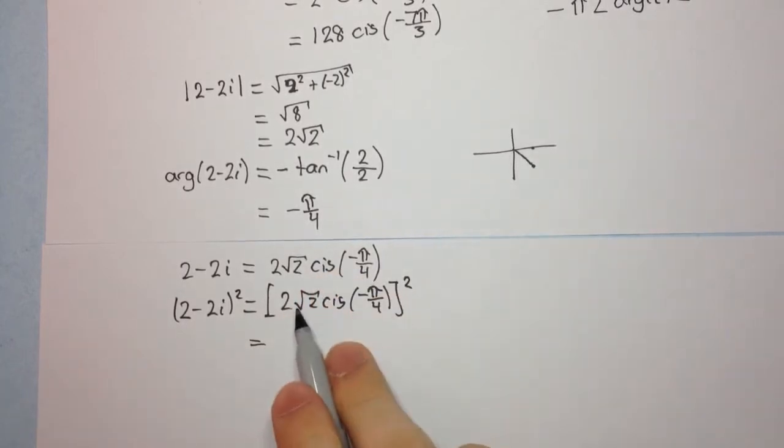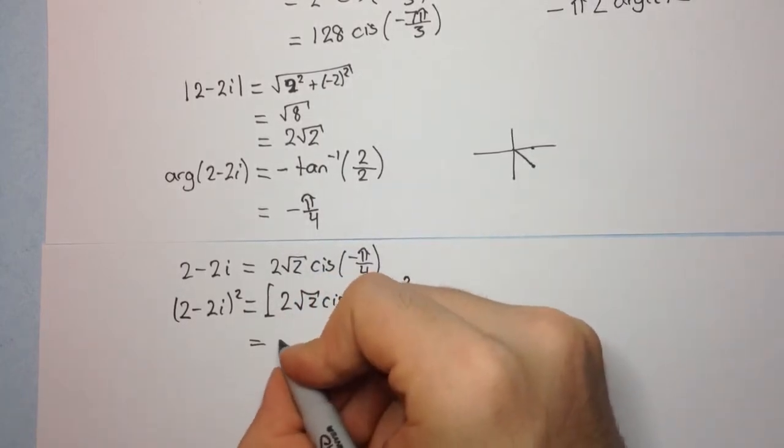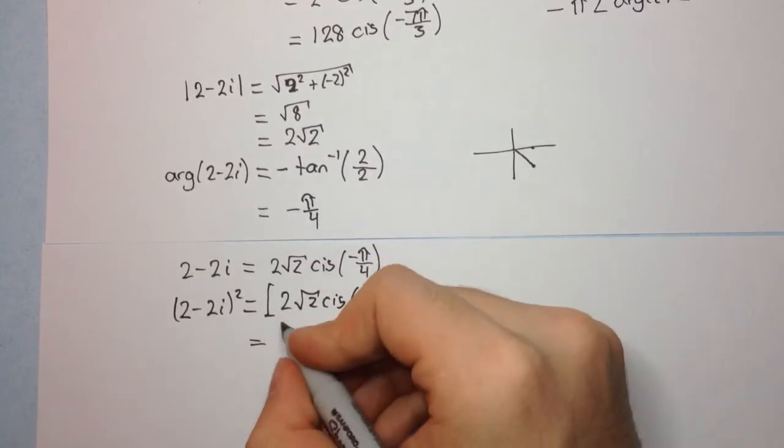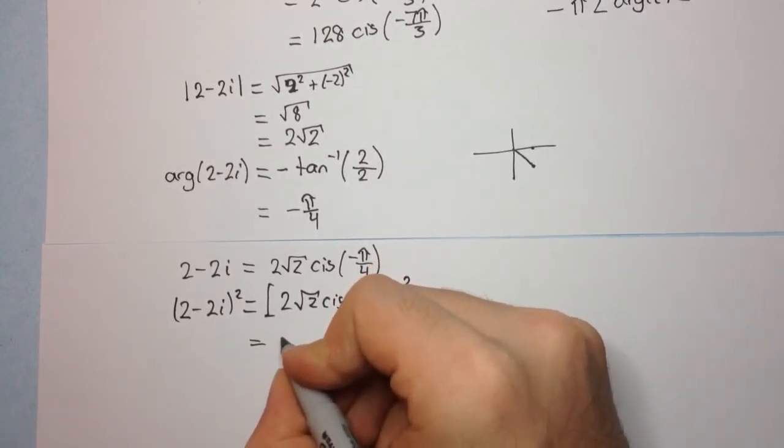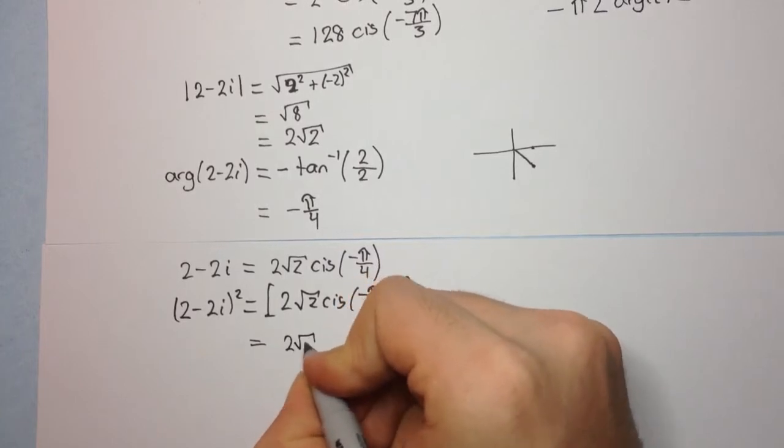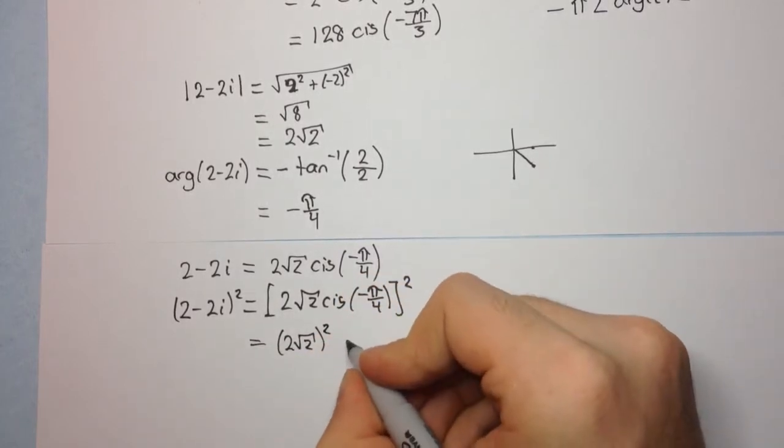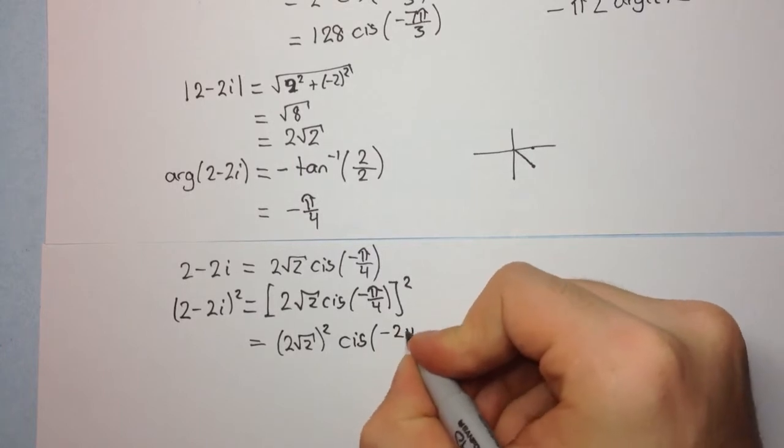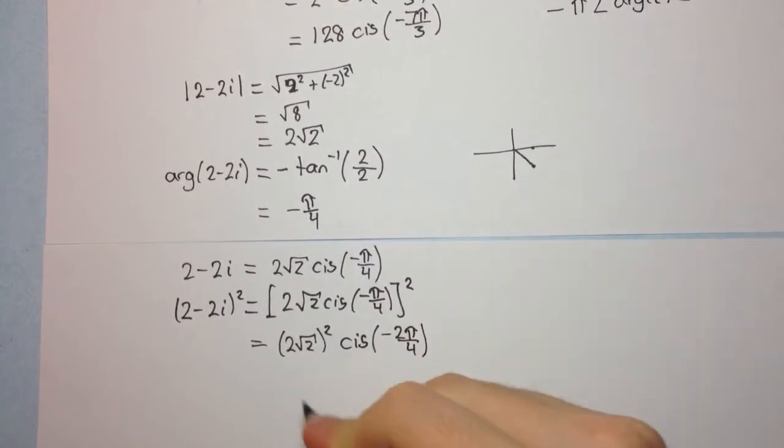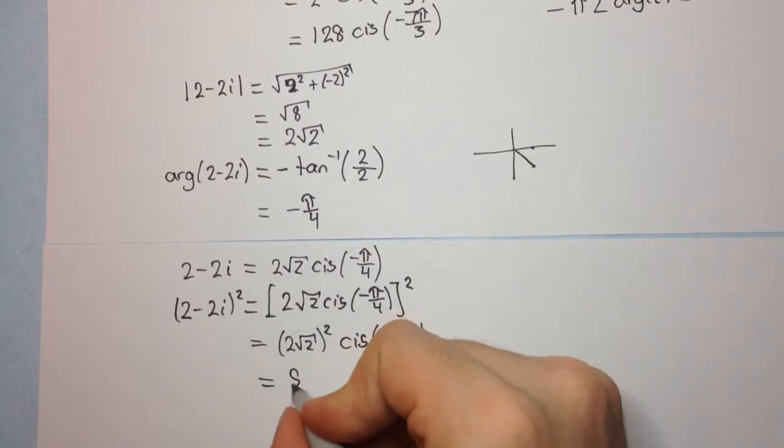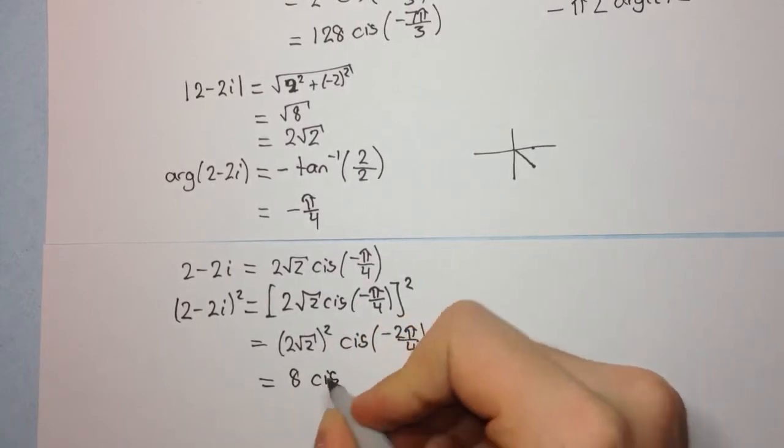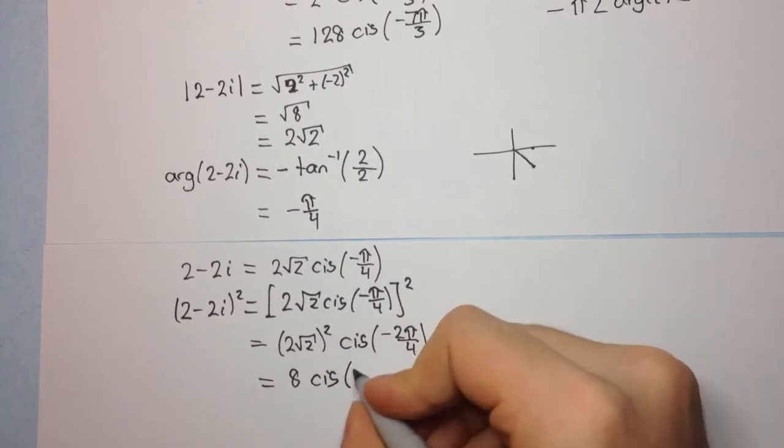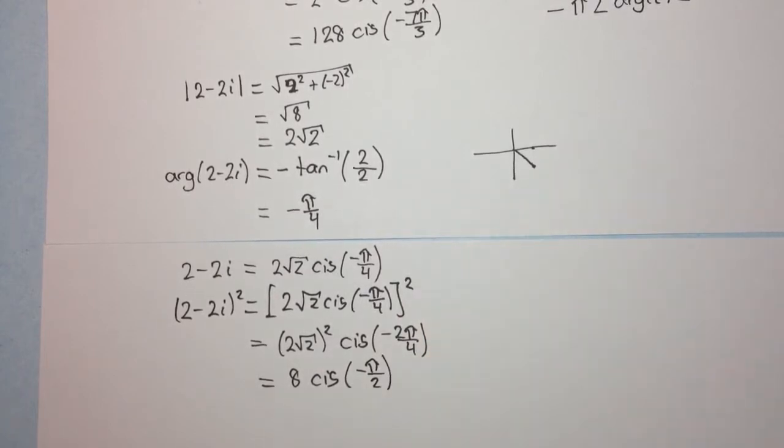Now we're going to square the moduli or the modulus, we only have 1, so we're squaring the modulus. So the square of 2√2, we'll come back to that, and this is now brought down and multiplied by the argument, so we're going to have -2π/4. When you work out this, this will become 8, so we're going to have 8 cis, and this will cancel and give us -π/2.